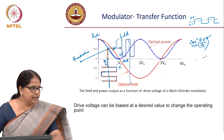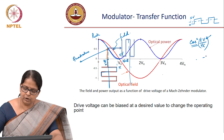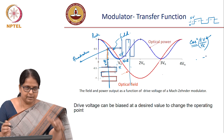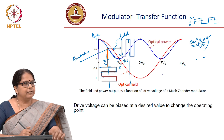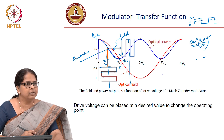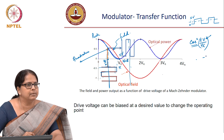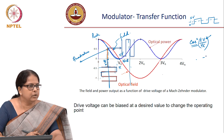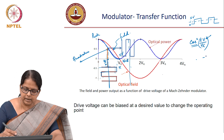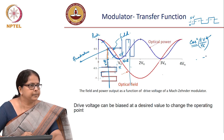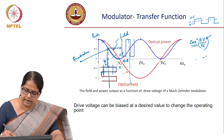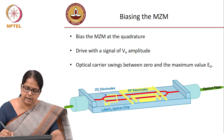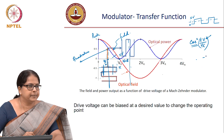In practical scenarios, even though you will get a large extinction between the high and the low, if you are driving the modulator with the full swing, you do not typically do that. You will operate in the linear regime, which means the swing voltage you will confine to the linear regime of the modulator.